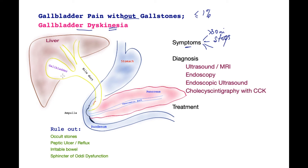What sets it apart from typical gallstone pain is that when an ultrasound scan or an MRI scan is performed, there are no gallstones. It is a diagnosis of exclusion and there is no single test that will definitively confirm that the patient is suffering with gallbladder dyskinesia.